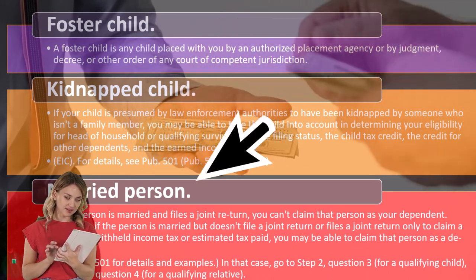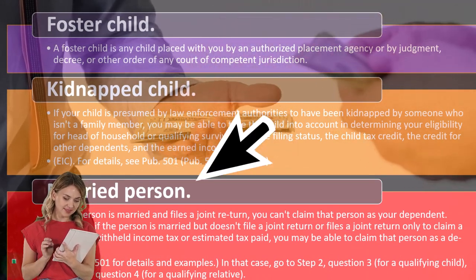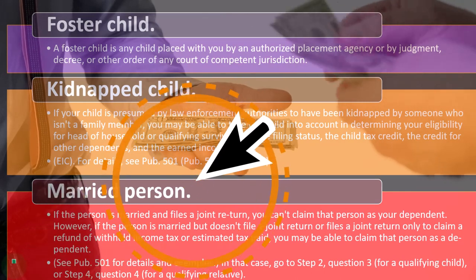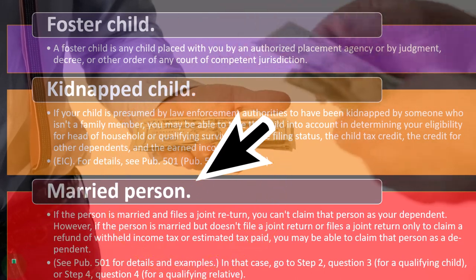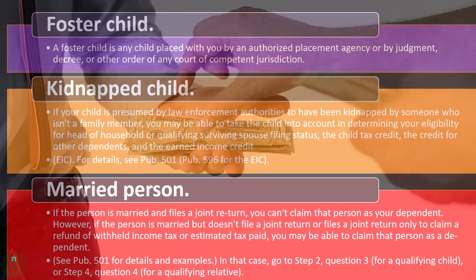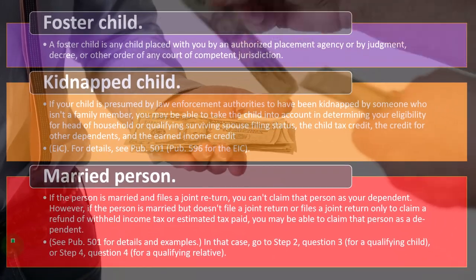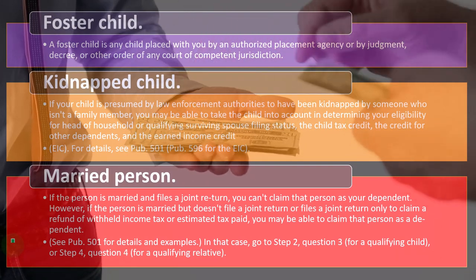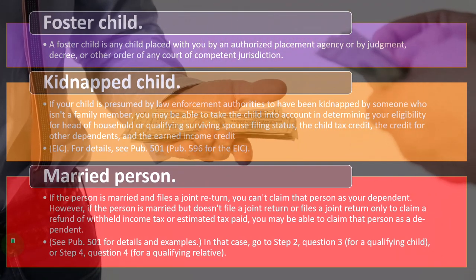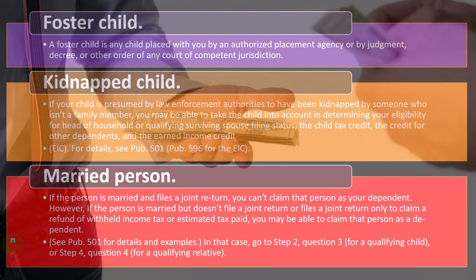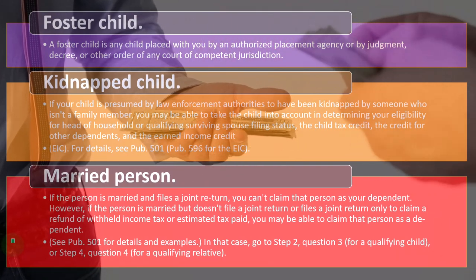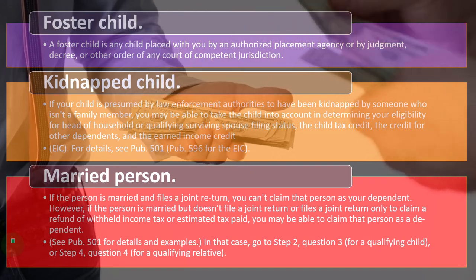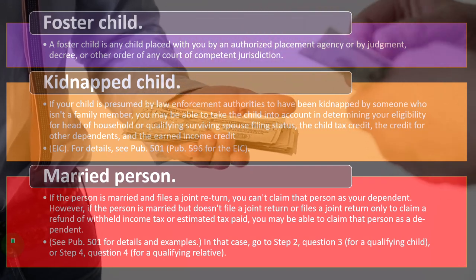Married person: if the person is married and files a joint return, you can't claim that person as your dependent. Obviously, you can't claim a married person as a dependent — there are two spouses who are married there.